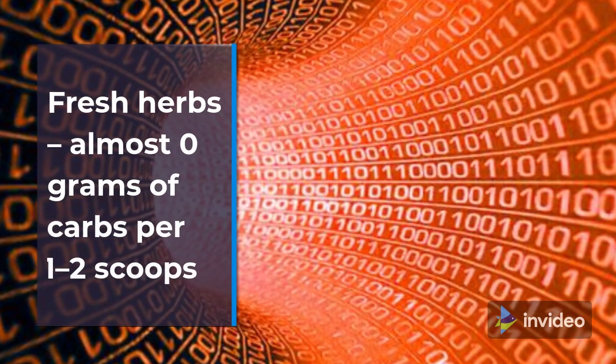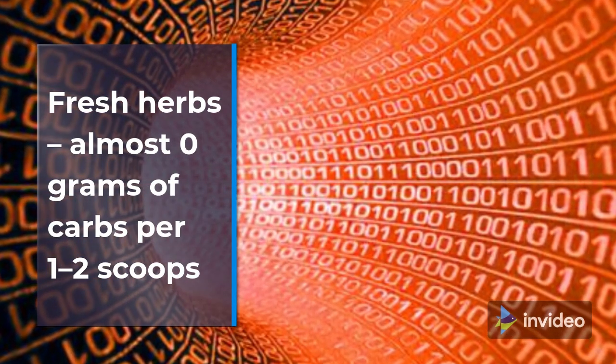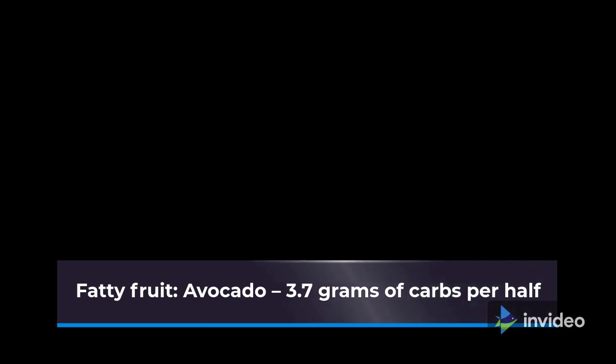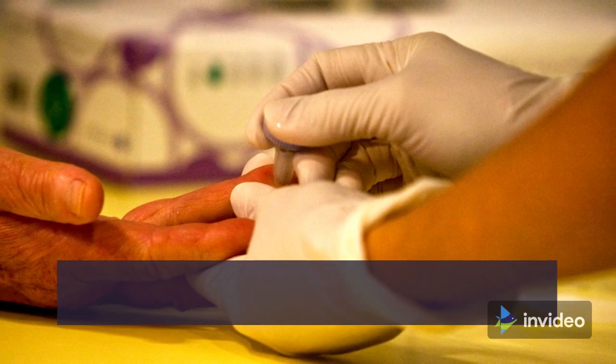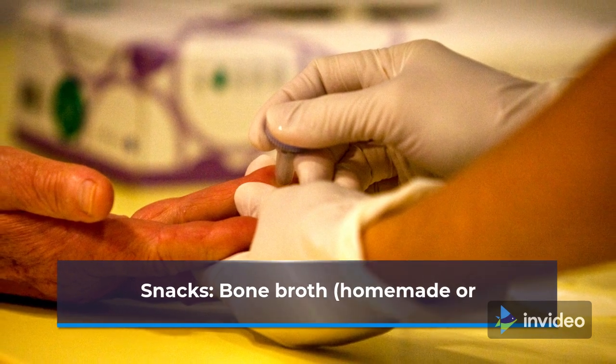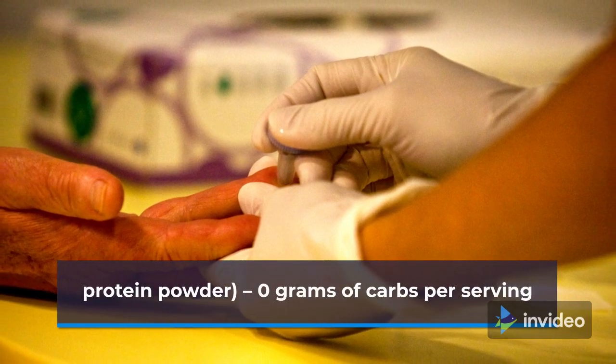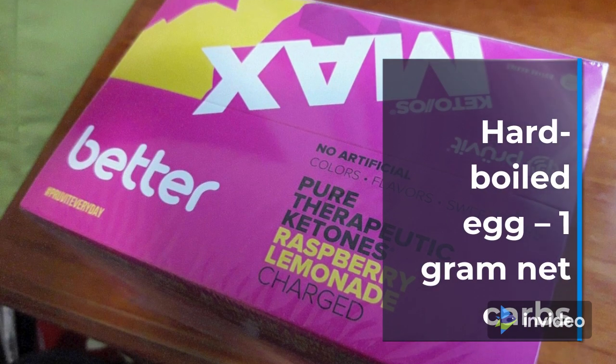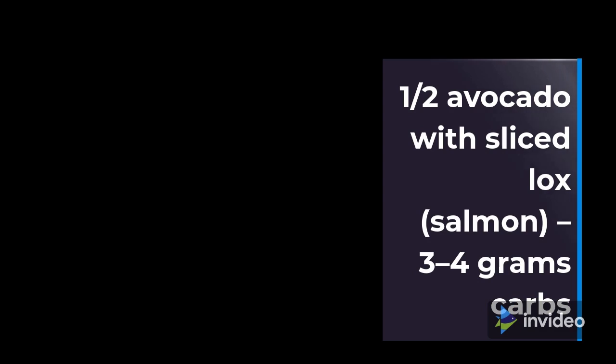Fresh herbs — almost 0 grams of carbs per 1 to 2 tablespoons. Fatty fruit: avocado — 3.7 grams of carbs per half. Snacks: bone broth — homemade or protein powder — 0 grams of carbs per serving. Beef or turkey jerky — 0 grams net carbs. Hard-boiled egg — 1 gram net carbs. Half avocado with sliced lox — salmon — 3 to 4 grams of carbs.